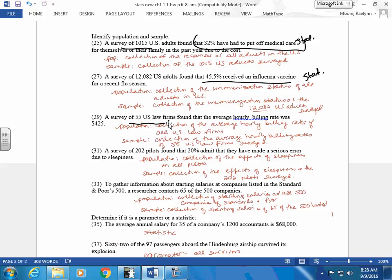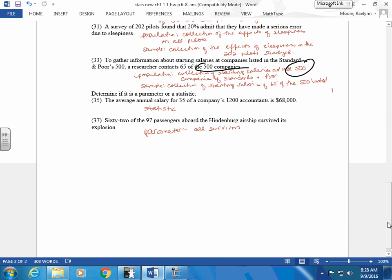To gather information about certain companies, a researcher contacted 65 of the 500 companies. So therefore, your population is 500 companies. Determine if it's a parameter or a statistic. Just make sure you know if it's a sample or a population. The average annual salary for 35 of the 1,200 accountants. So this is a sample. So this information right here, the average salary, is a statistic. 62 of the 97 passengers aboard the Hindenburg ship survived the explosion. This is your population, 97.